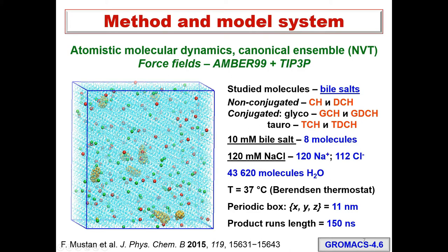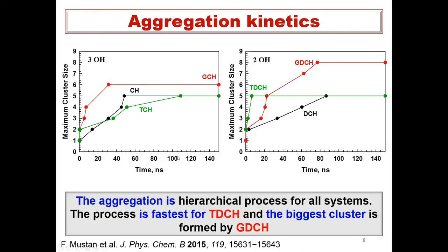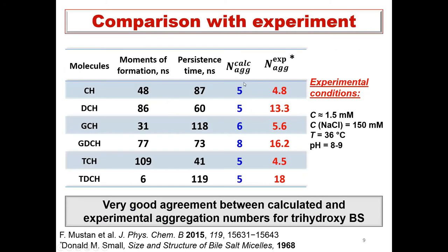As a first step we analyzed the aggregation process during the simulation. Here the maximum cluster size as a function of simulation time is presented for three-hydroxy and two-hydroxy derivatives. You can see that the process is hierarchical and fastest for taurodeoxycolate. The biggest aggregates are formed by glycine-conjugated derivatives, while conjugated and non-conjugated derivatives form stable pentamers. We compared the obtained aggregation numbers with experimentally determined values at similar conditions and found very good agreement for molecules with three hydroxyl groups.